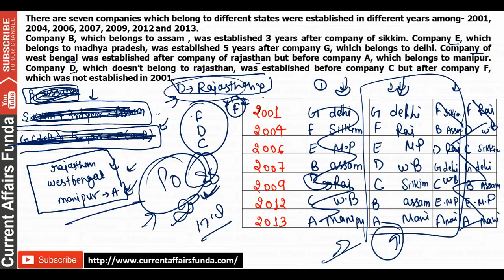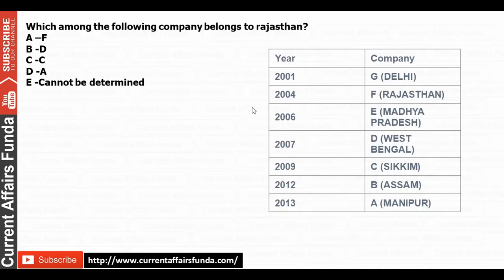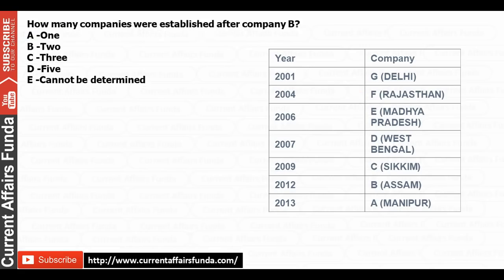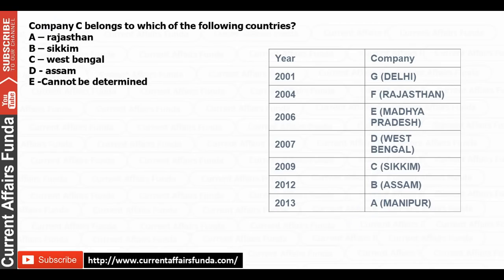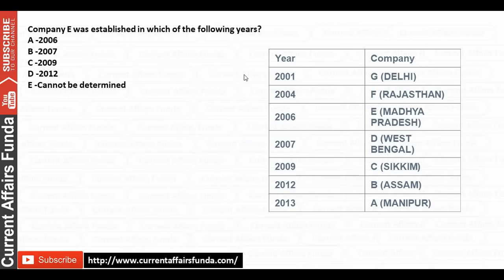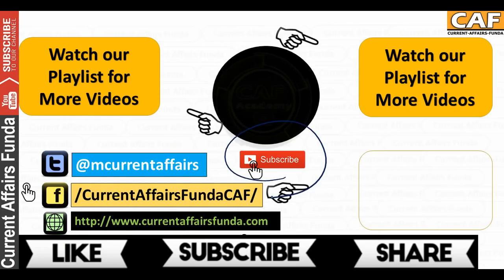So that is all you need for your preparation — vacancies are very good, so don't miss this opportunity. Given the clues, which company belongs to Rajasthan? The answer is Company F — option number A is correct. How many companies were established after Company B? Only one — option number A. The answers are in the comment section. Please subscribe to the channel for regular notifications, and visit the channel daily if you don't receive them. Thanks for watching and have a good day!